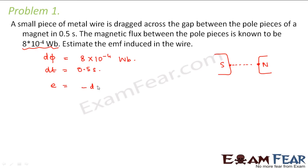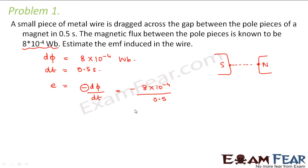From Faraday-Lenz law we know that EMF induced is equal to minus dΦ/dt. The minus sign indicates that the induced EMF always opposes the change of flux which produced it — it is only about the polarity of the EMF. So this becomes 8 × 10⁻⁴ divided by 0.5, which comes out to be 1.6 × 10⁻³ volts. This is the EMF that is induced in the wire.